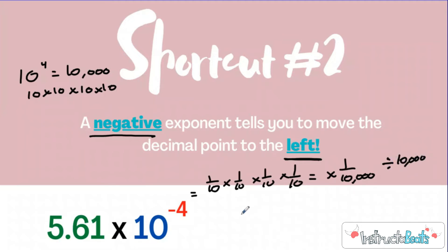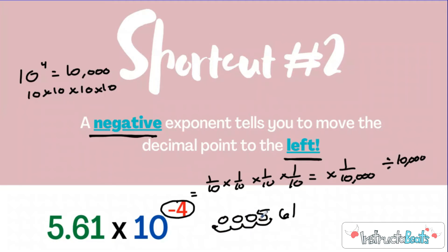Shortcut number two: a negative exponent tells us to move the decimal four places to the left. So if I write this number down and move it one, two, three, four places to the left, and put my non-significant zeros in, my answer would be 0.000561 — which is really 561 millionths. Very, very, very small number. You can see it's a little bit easier to write this with scientific notation, but even this one isn't super long with a lot of digits. So let's take a look at an I-do problem.